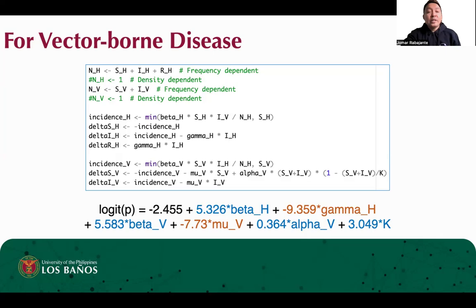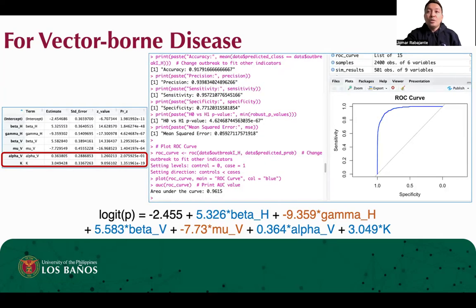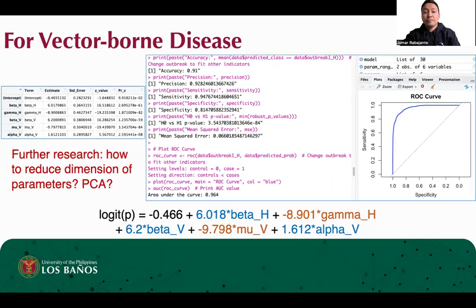For more complex models like vector-borne diseases such as dengue, here is the logistic regression equation to identify what parameter combinations will lead to R-naught greater than 1 or less than 1. We see that as models become more complicated and as the number of parameters increases, the predictive performance of the logistic regression may decrease. However, the accuracy is still high. We can check if there are parameters that we can combine — for example, alpha and K in the vector-borne disease model, which both affect the reproduction of the mosquito population. Setting K as constant, the performance improves. Hence, the question is how can we reduce the dimension of the parameters, and can we use additional algorithms such as principal component analysis to improve our method? This is for further research.